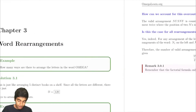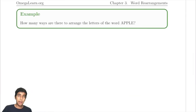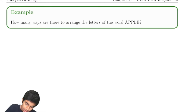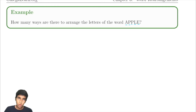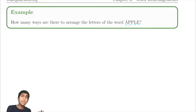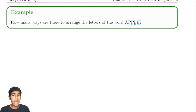So word rearrangements — let's take a quick example. How many ways are there to arrange the letters of the word apple? There's A, P, P, L, E. This reminds us a lot of how we could arrange five books on a bookshelf or five objects in a line, like we explored in the permutations video.